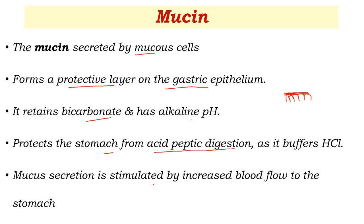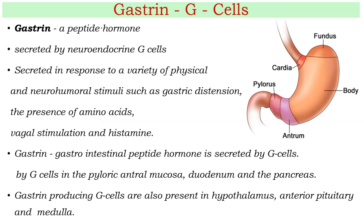Mucus secretion is stimulated by increased blood flow — if there is increased blood flow, it automatically synthesizes mucus in the stomach. Gastrin is a very important peptide hormone, which is secreted by the neuroendocrine G cells.